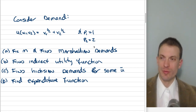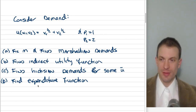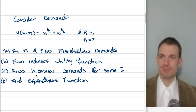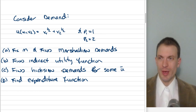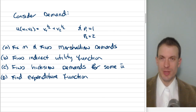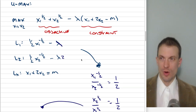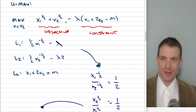Hello and welcome everyone. I'm going to run through finding Marshallian demands, the indirect utility function, Hicksian demands, and the expenditure function for this utility function with these prices. What we need to do for finding our Marshallian demands is write out our consumer's utility maximization problem. The consumer is trying to maximize utility by choosing the amount of good one and good two subject to some constraint.